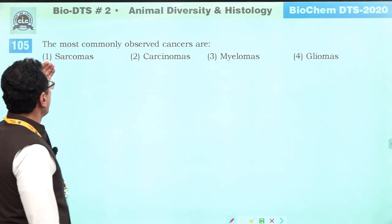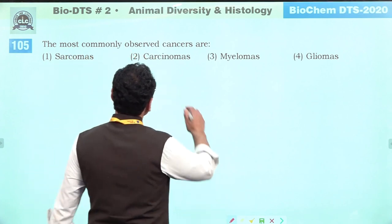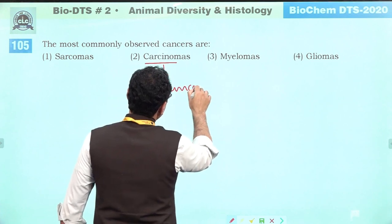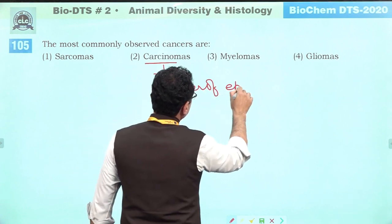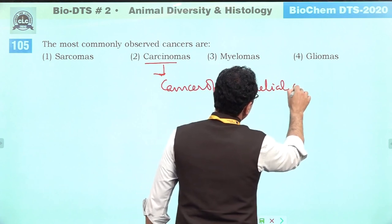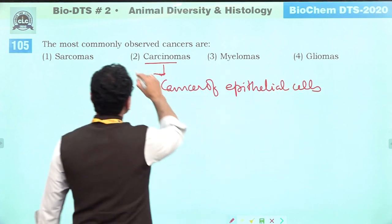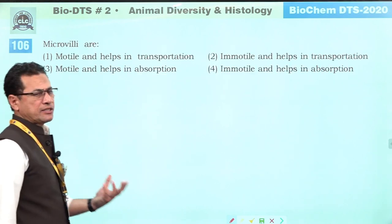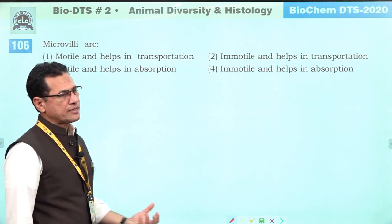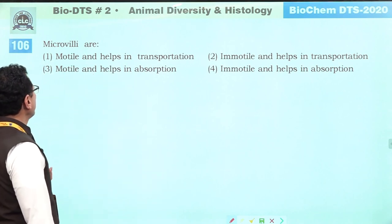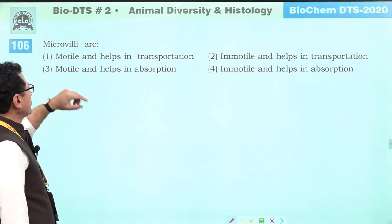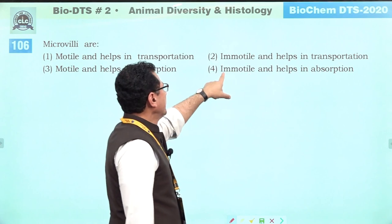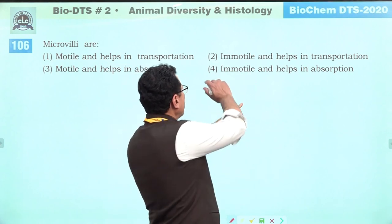The most commonly observed cancers are carcinomas — cancer of epithelium cells. Microvilli increase the surface area for absorption. They are non-motile/immotile structures found at various locations. Immotile and helps in absorption — answer is fourth.